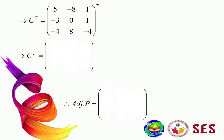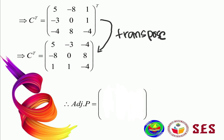After getting the cofactor matrix, to find the adjoint we need to transpose it. To transpose a matrix, we change rows into columns and columns into rows. For this matrix we get 5, negative 3, negative 4, negative 8, 0, 8, 1, 1, and negative 4. Therefore, adjoint P is this matrix. Remember: find the cofactor first, then transpose it to get the adjoint.